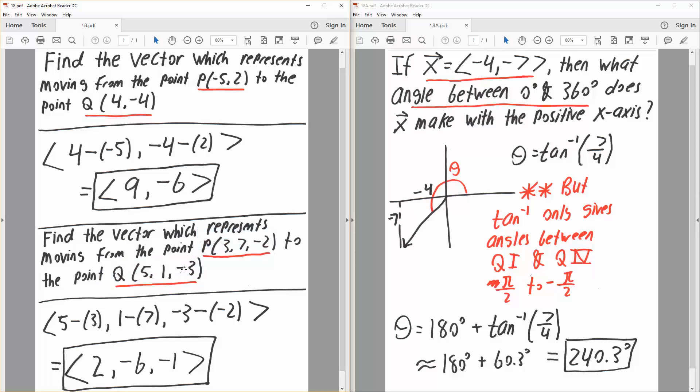It's going to be 5 minus 3, 1 minus 7, -3 minus (-2). So 5 minus 3 is 2, 1 minus 7 is -6, -3 minus -2, so -3 plus 2 is -1. This is the final answer.